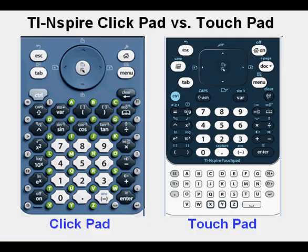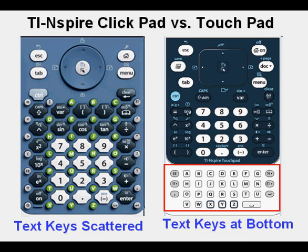Now we'll look at a side-by-side comparison of the keypads. The original clickpad is on the left and the newly designed touchpad is on the right. The first thing you might notice is that on the clickpad, the text keys are scattered all over the keyboard — the little green keys in the center as well as the little gray keys on the perimeter. But on the touchpad, the text and punctuation keys are brought down to the bottom portion of the keypad, shown by the red rectangle. In the BlackBerry-style age that we live in, many people prefer the touchpad for that feature alone, but the keys had to be made smaller to account for the space lost to the text keys.